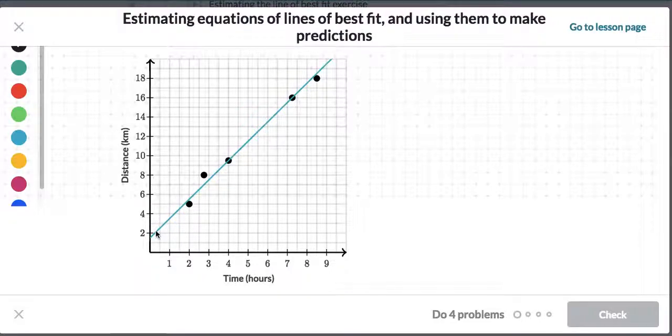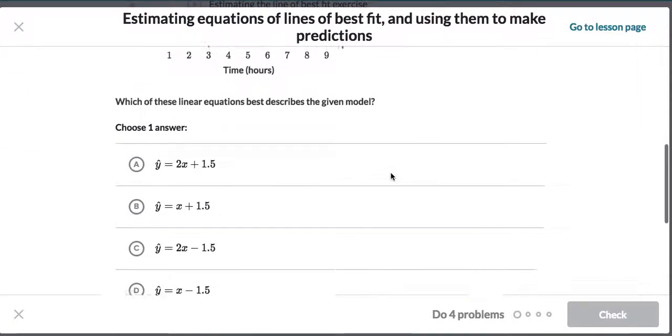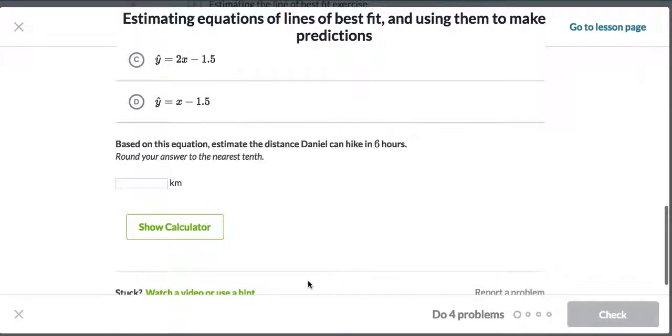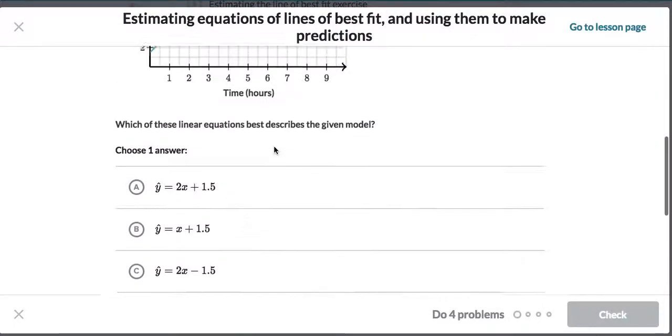And what we've done here is we've got a line of best fit through this data right here. Now we're being asked which of the equations describes the model first of all. So we've got some equations to go by here which is nice. And based on that we're being asked to estimate the distance that Daniel can hike in six hours. So we do have to use the equation that we've selected to estimate the distance. So let's take a look at what we've got.